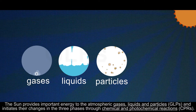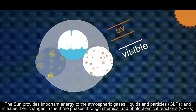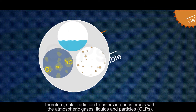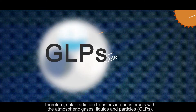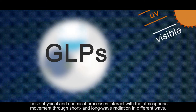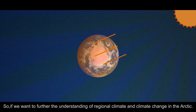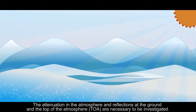The sun provides important energy to the atmospheric gases, liquids and particles, and initiates their changes in the three phases through chemical and photochemical reactions. Therefore, solar radiation transfers in and interacts with the atmospheric gases, liquids and particles. These physical and chemical processes interact with the atmospheric movement through short and long wave radiation in different ways. So, if we want to further the understanding of regional climate and climate change in the Arctic, the attenuation in the atmosphere and reflections at the ground and the top of the atmosphere are necessary to be investigated.